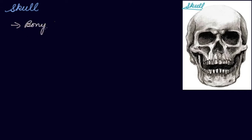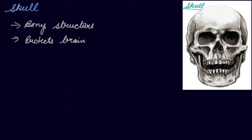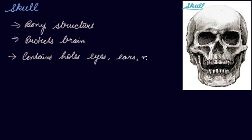Your skull is a bony structure. It protects the brain. Your skull is made up of bones and underneath there is a brain. It protects your brain. It contains holes for eyes, ears, nose and mouth.